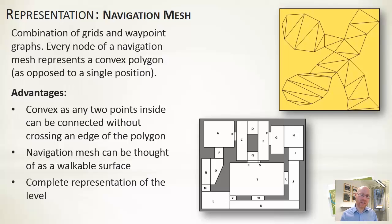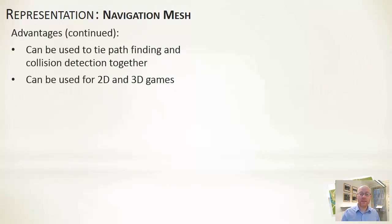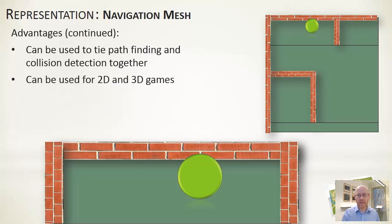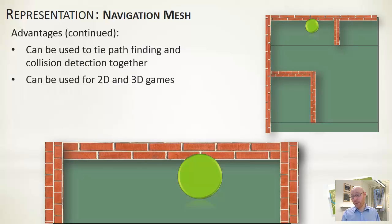Because we have defined the walkable surface, we can also use it for collision detection — keeping the character on the walkable surface and preventing them from leaving. Navigation meshes are very flexible, working for both 2D and 3D games. They're more sophisticated than the other representations but arguably as good as anything needed within a game.